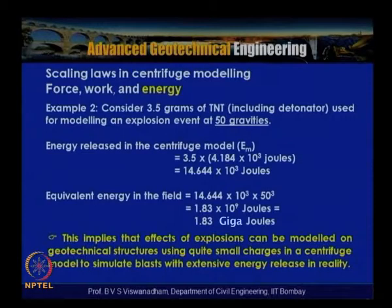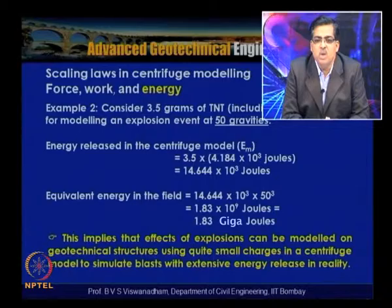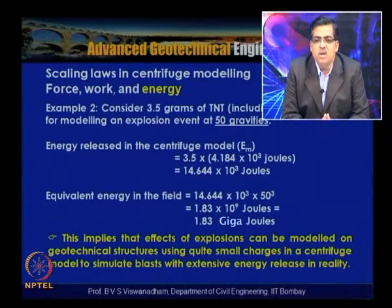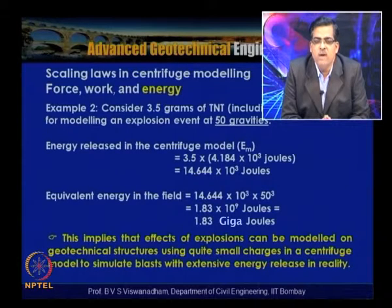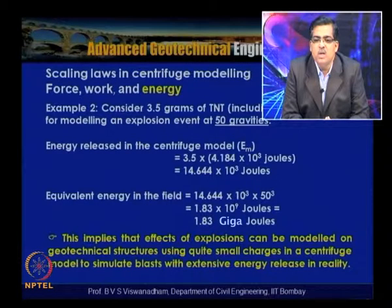Example 2: Consider 3.5 grams of TNT including detonator used for modeling an explosion event at 50 gravities. Energy released in the centrifuge model = 3.5 × 4.184 × 10³ = 14.644 kJ. The equivalent energy in the field = 14.644 × 10³ × 50³ = 1.83 × 10⁹ joules, that is 1.83 gigajoules.